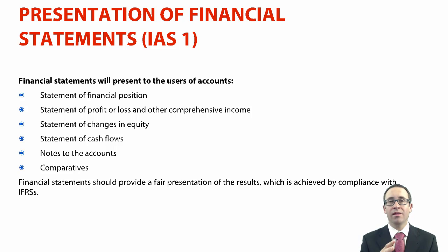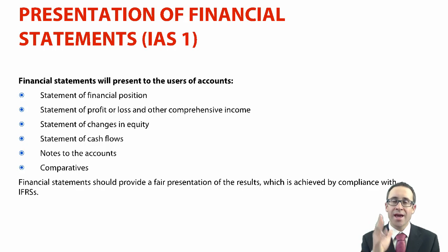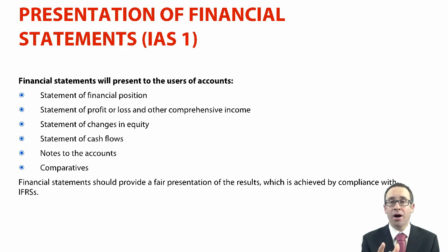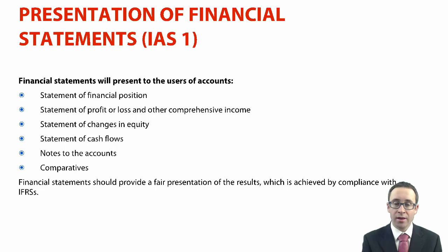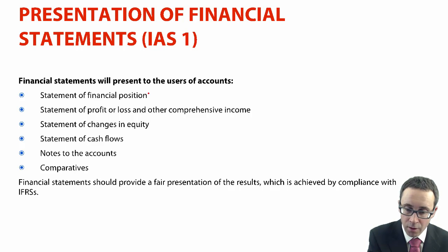In terms of question one, Part A for 35 marks — 63 minutes of your life — you need 18 marks to go through that and pass the question. You will either have to prepare a group statement of financial position, so it's important that we recap what we know for your position statement.